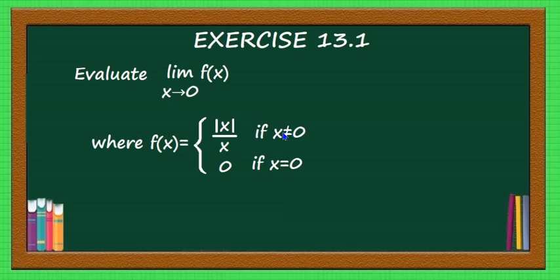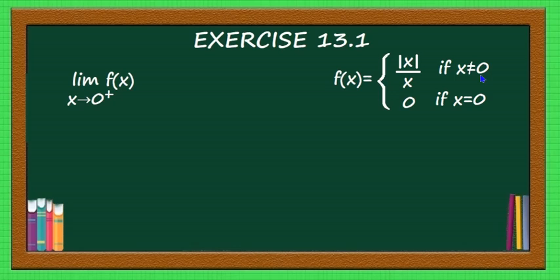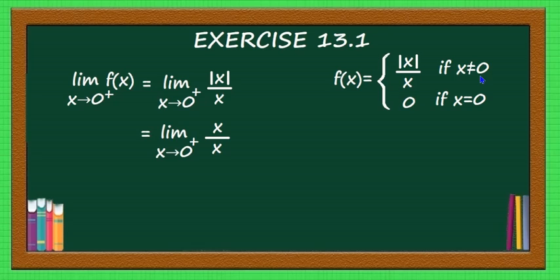Now take this question: evaluate limit extending to 0 of f(x), where f(x) equals mod x divided by x if x is not equal to 0, and 0 if x equals 0. To solve this, take limit extending to 0 plus of f(x). When x is not equal to 0, the function is mod x by x — this applies for both 0 plus and 0 minus. Since 0 plus means x is positive, mod x equals x, so mod x by x equals x by x, which equals 1. Therefore the right-hand limit is 1.